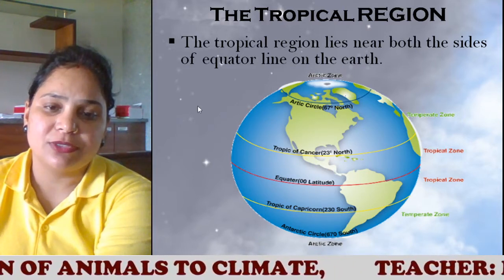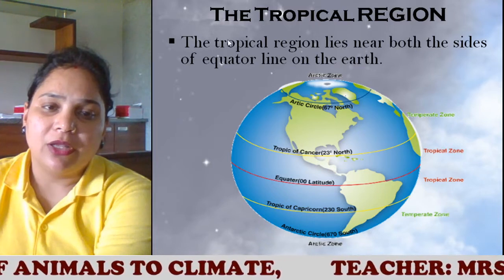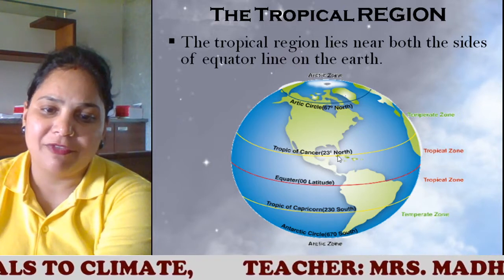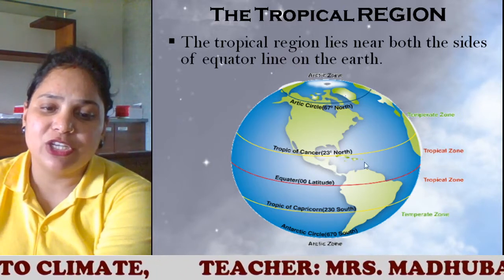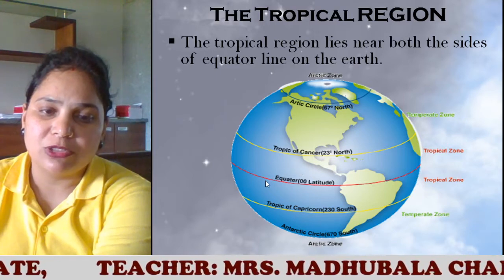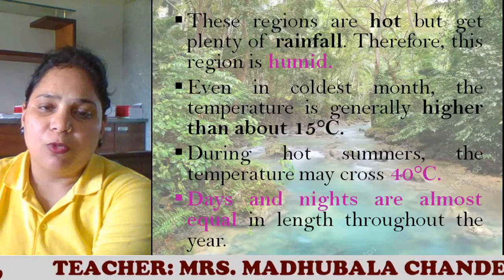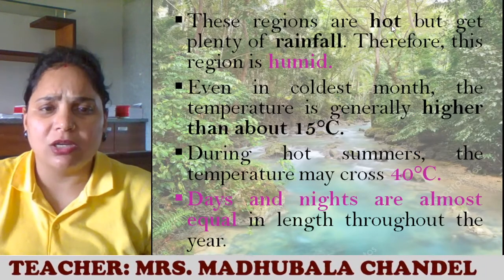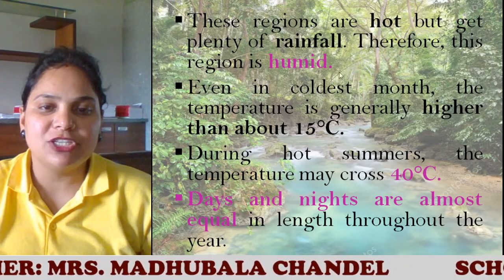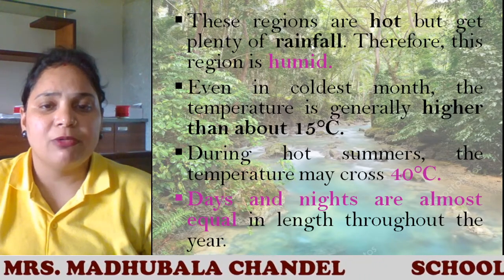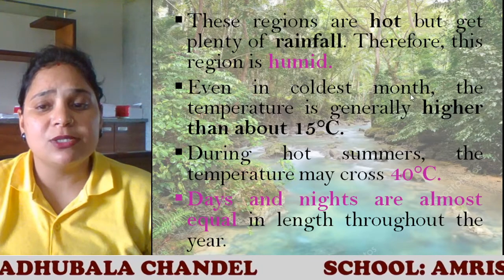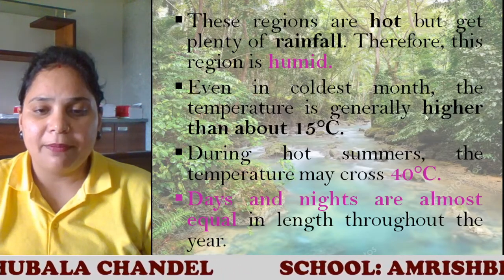The tropical region lies near both sides of the equator. As you can see, Tropic of Cancer, Tropic of Capricorn, and the whole region in between is called the tropical zone. We also have a subtropical zone present here. These regions are very hot but get plenty of rainfall, therefore this region is humid. Even in the coldest month the temperature is generally higher than about 15 degrees Celsius.